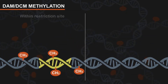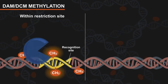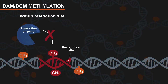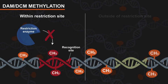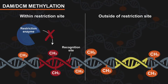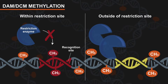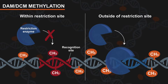If present within the recognition site, a methyl group can prevent the restriction enzyme from binding and cleaving. However, DAM and DCM methylation will only impact restriction digestion of a plasmid if the restriction and methylation sites overlap.